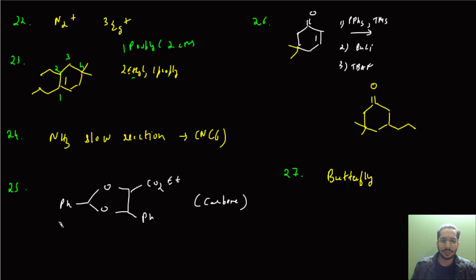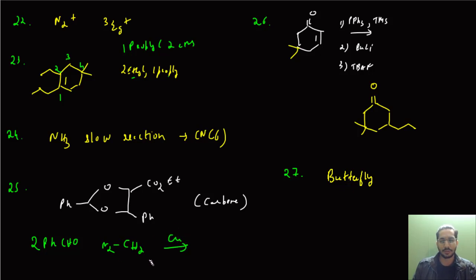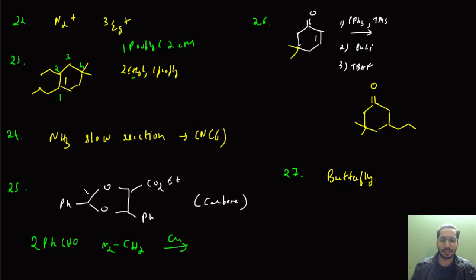There was a question based on carbene where 2 equivalents of benzaldehyde were given along with CH₂N₂ and a copper catalyst. A carbenoid will be generated, and then the oxygen of benzaldehyde attacks the electrophilic carbene. That carbene converts into a carbocation, which further attacks, and ultimately you get the product I've drawn here.